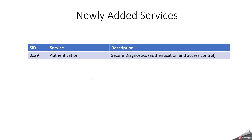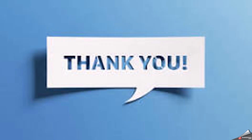Another newly added service is 0x29, mainly for authentication. This was added very recently and is primarily for secure diagnostics — that means authentication and access control. These are the list of diagnostic services we are using in DCM as part of the UDS protocol.